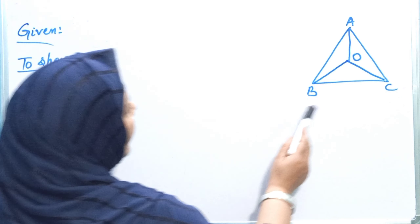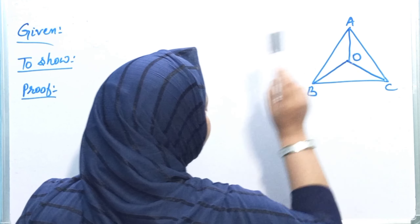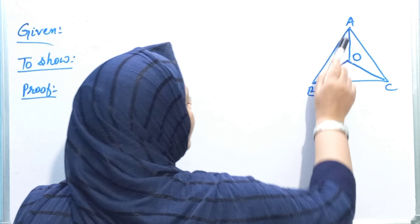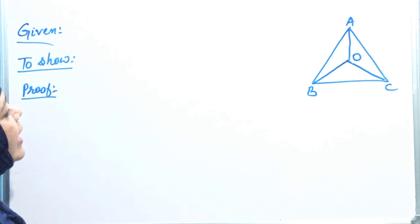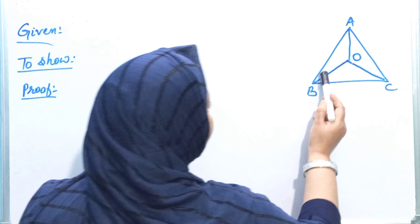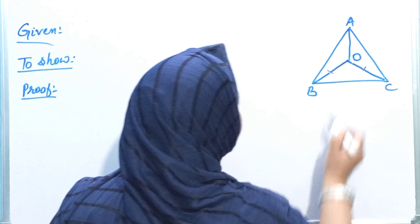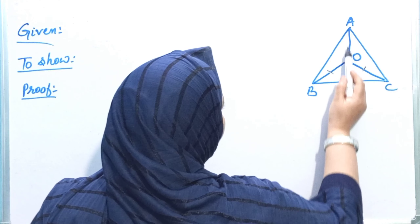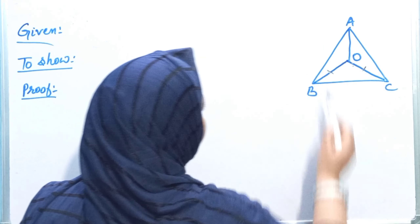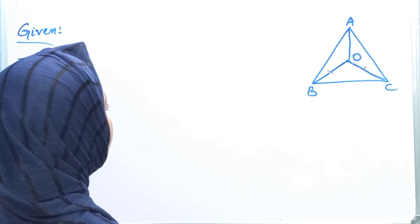The angle B and angle C bisectors meet at O, giving us points OB and OC. We join OA. We have to prove two parts: first, that OB equals OC; second, that AO bisects angle A.